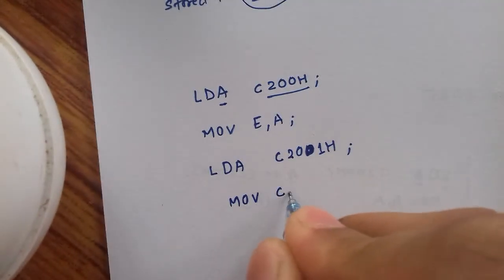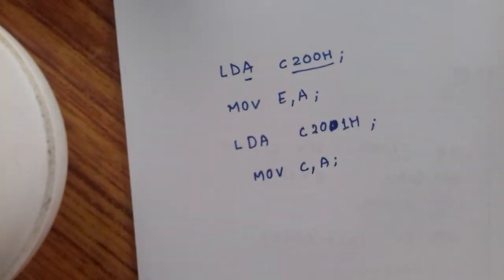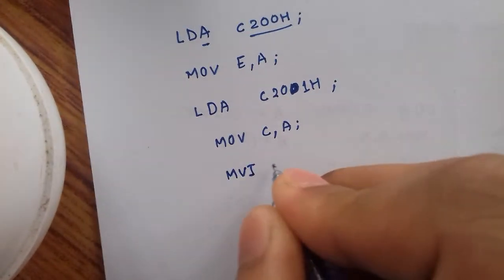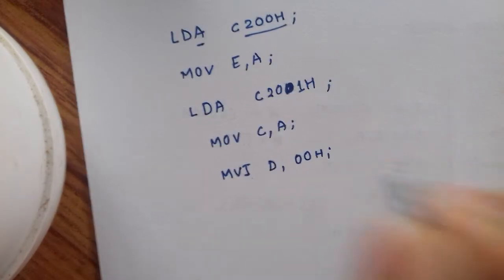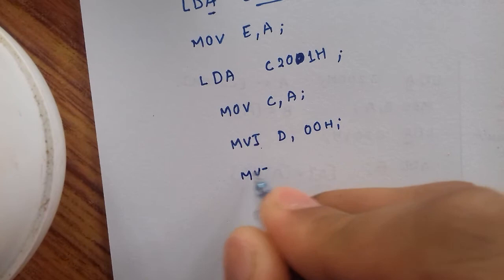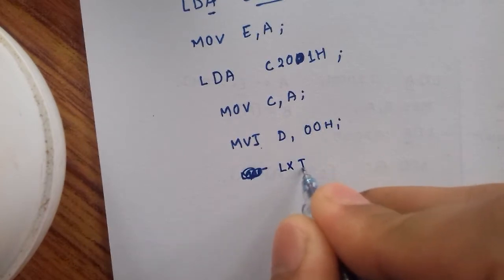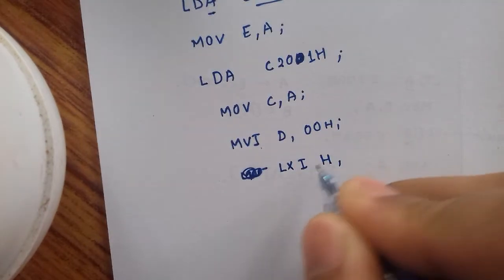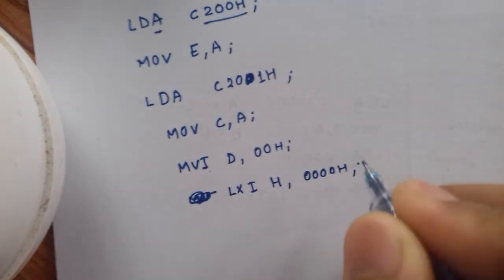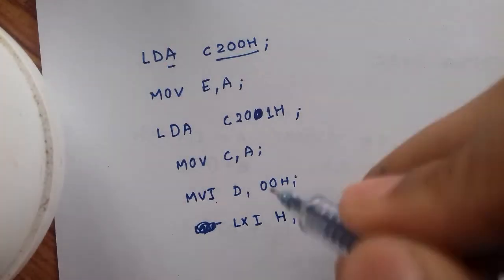Now we will load an immediate data into the D register. We will clear the D register, meaning we are setting it to zero. We will also clear the HL pair to 0000H.